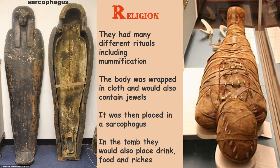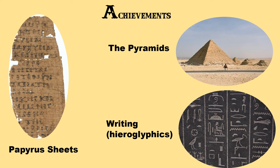They believed in an afterlife — once you died on earth you went on to an afterlife very similar to life on earth, so you would want your belongings with you. Another interesting belief was that once you die, the god of the dead Anubis would weigh your heart on a scale. He would put an ostrich feather on one side and your heart on the other. If your heart was lighter than the feather, you had lived a good life and could go on to the afterlife. But if your heart was heavier than the feather, an Egyptian demon would eat it.